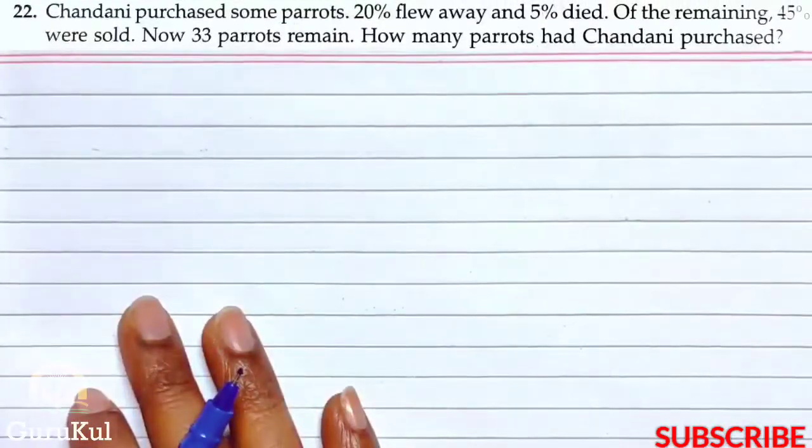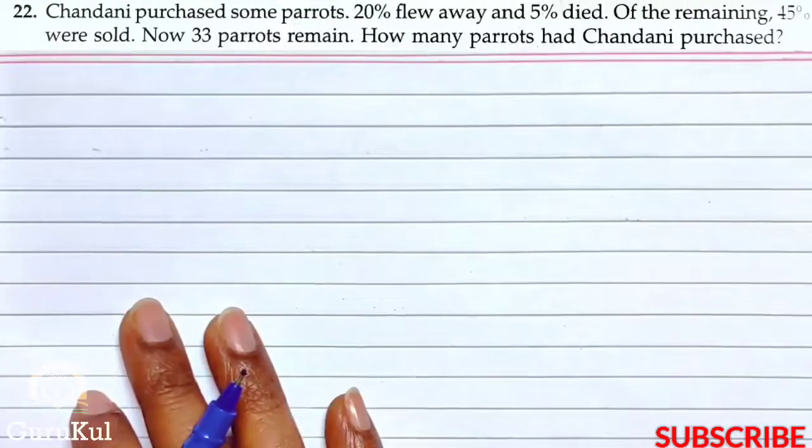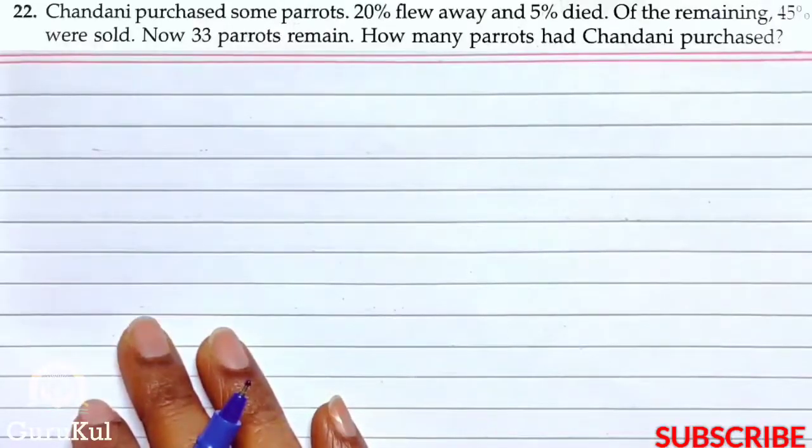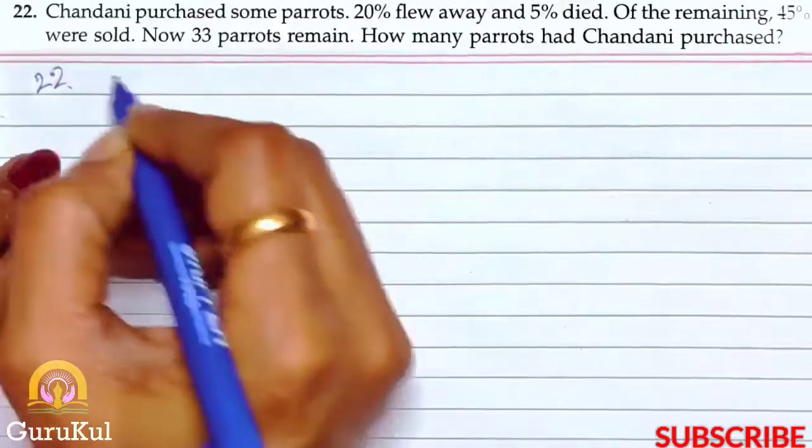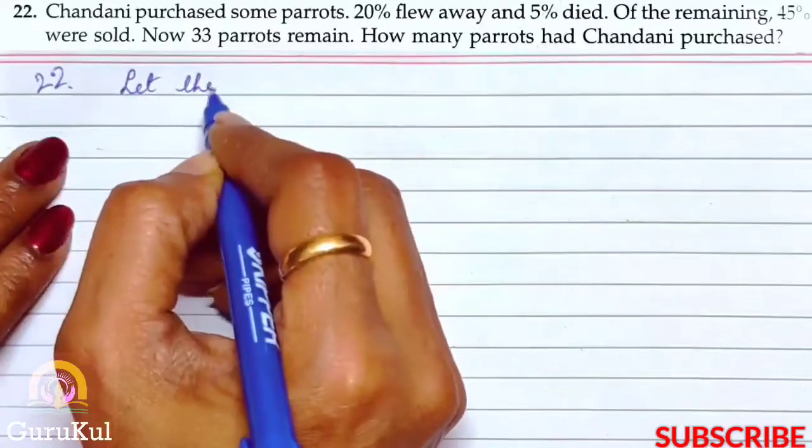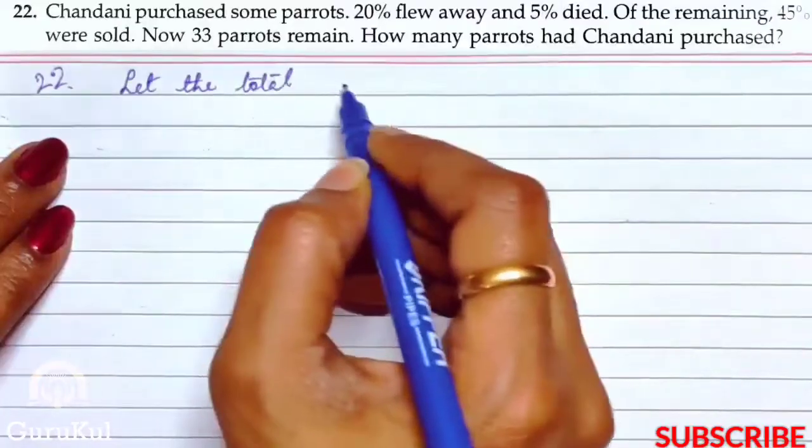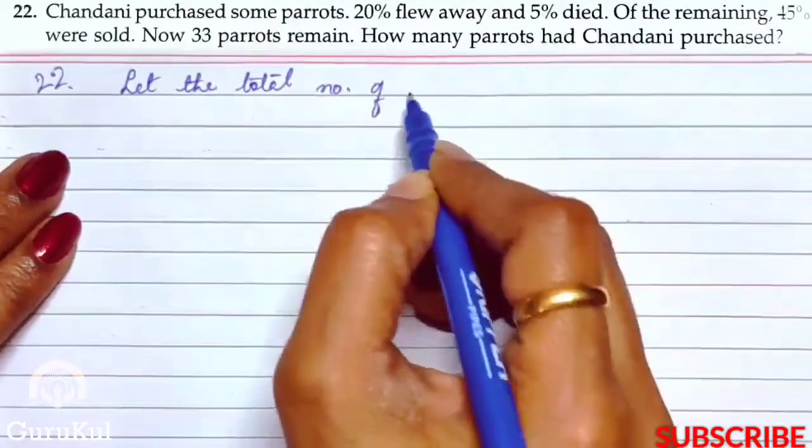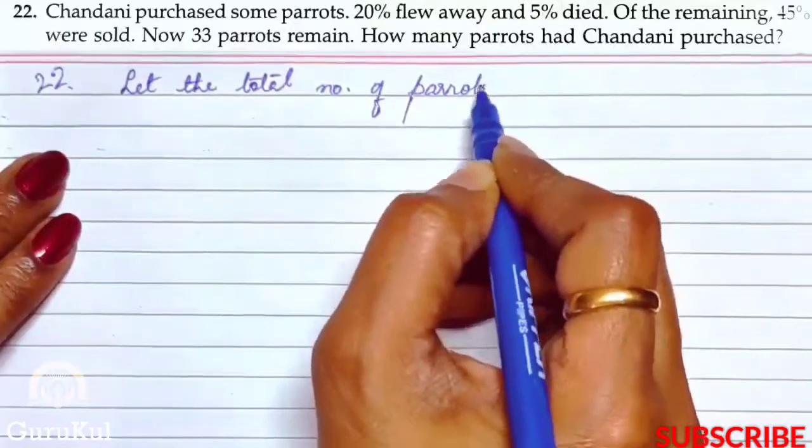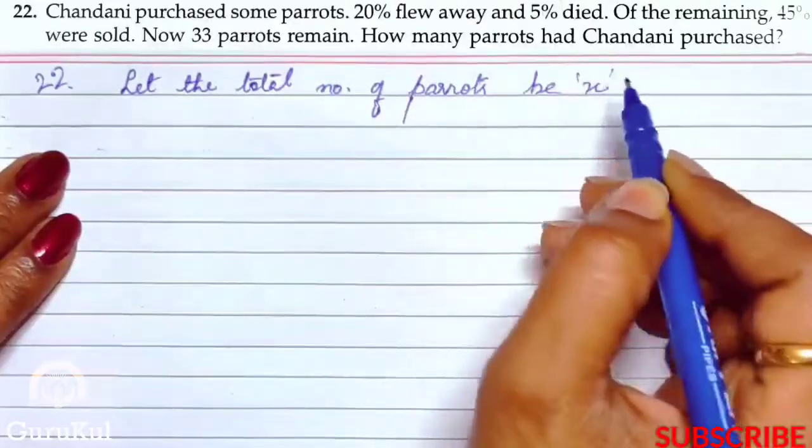Question number 22. Chandni purchased some parrots. 20 percent flew away and 5 percent died. Of the remaining, 45 percent was sold, now 33 parrots remain. How many parrots had Chandni purchased? The total number of parrots is unknown, which we have to find out. Let the total number of parrots be x.